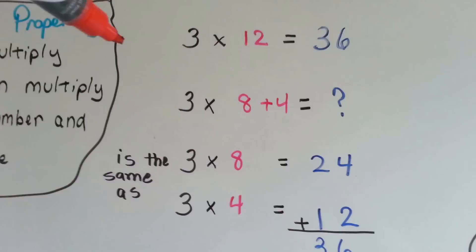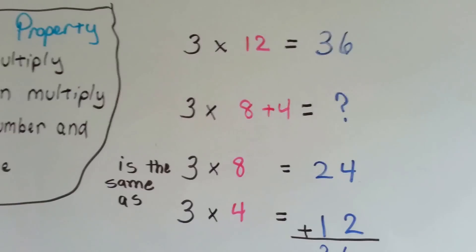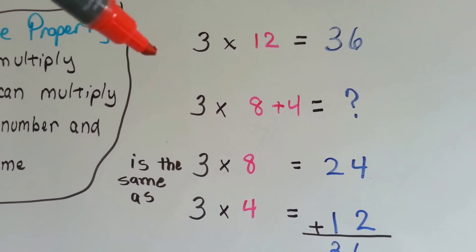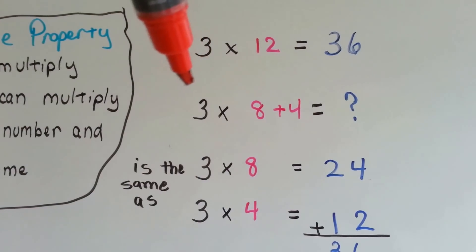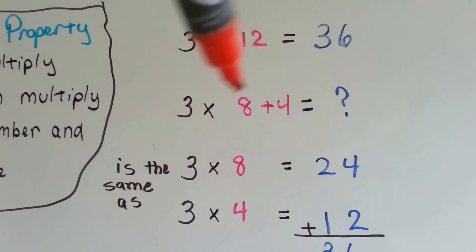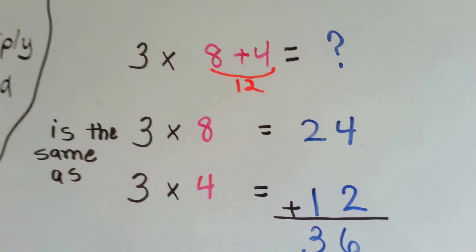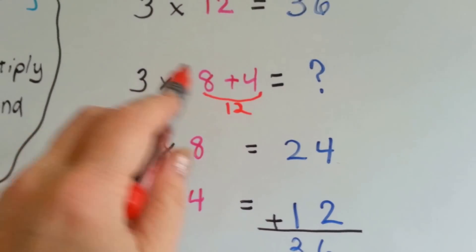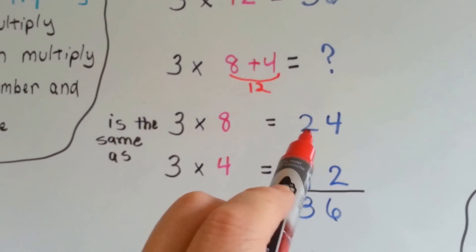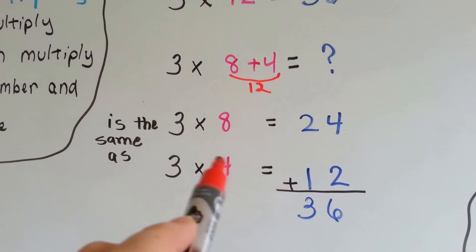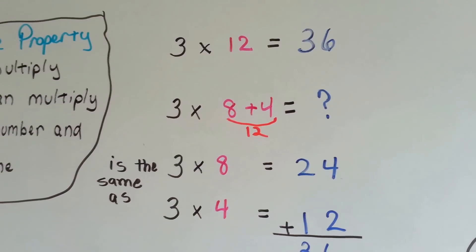If we needed to do 3 times 12, we could either do the 3 times 12 the regular way, or we could use the distributive property which says we can do 3 times 8 plus 4, because 8 plus 4 equals 12. So we can do 3 times 8, then 3 times 4, and add them together. 3 times 8 is 24 and 3 times 4 is 12. We add them together and we get 36, which is the same thing as doing 3 times 12.